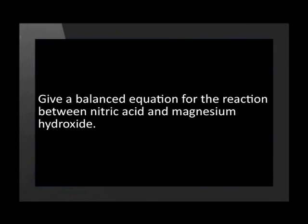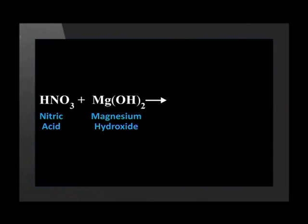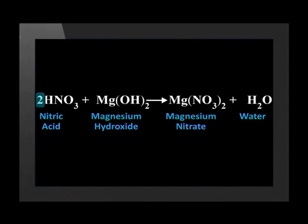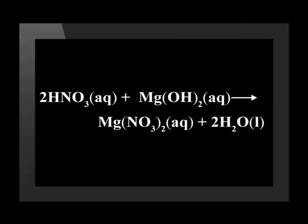Give a balanced equation for the reaction between nitric acid and magnesium hydroxide. Our reactants are nitric acid and magnesium hydroxide. Since we use nitric acid, a nitrate salt will be formed — in this case, magnesium nitrate. To complete the equation, the reaction of an acid with an alkali produces a salt and water. Then we check whether the equation is balanced — it is not, so we add a 2 in front of the nitric acid and a 2 in front of water. Finally, we put in the phase indicators to show that the reactants and products are in aqueous solution.